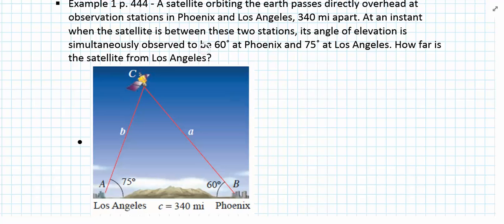At an instant when the satellite is between these two stations, its angle of elevation is simultaneously observed to be 60 degrees at Phoenix and 75 degrees at Los Angeles. How far is the satellite from Los Angeles?